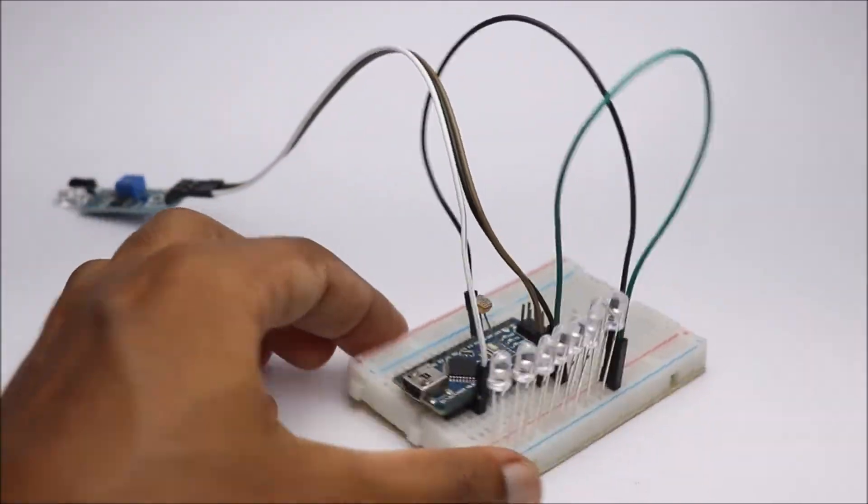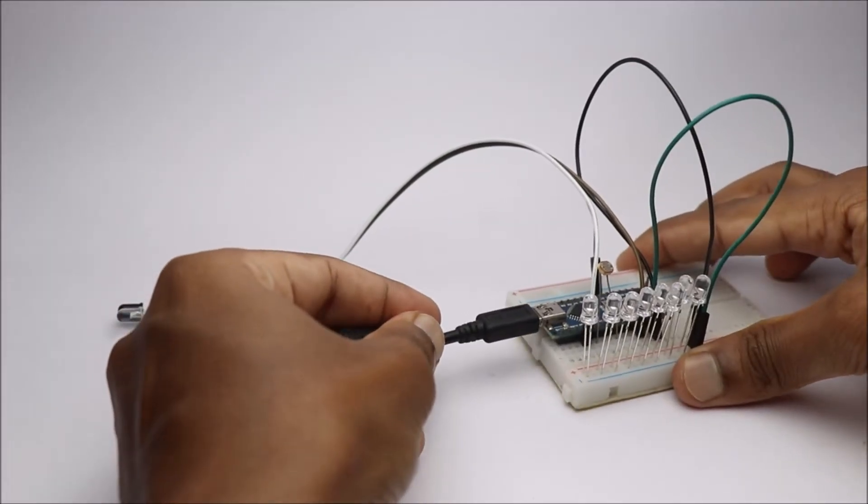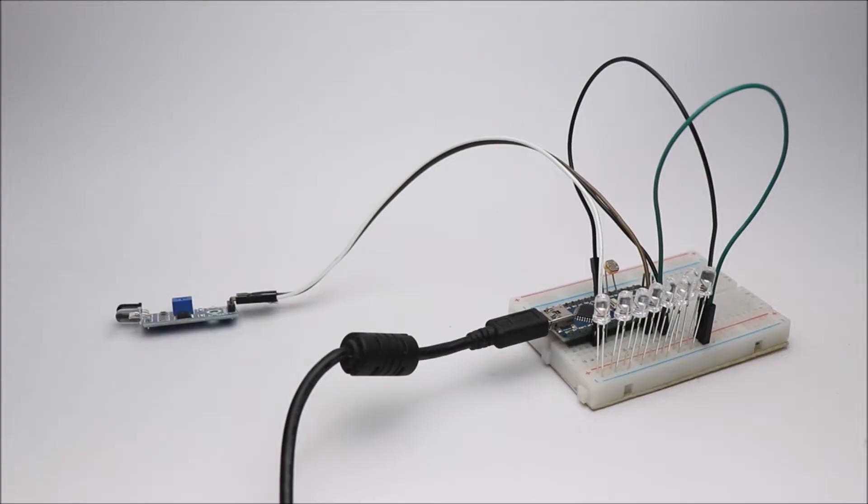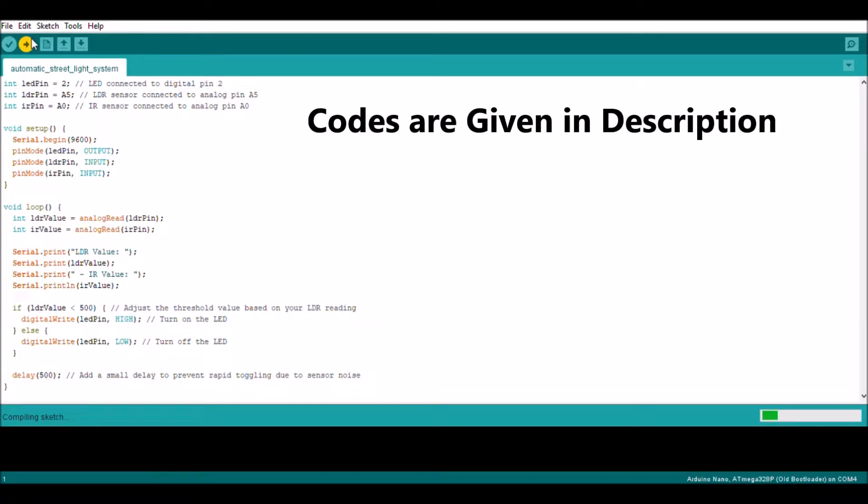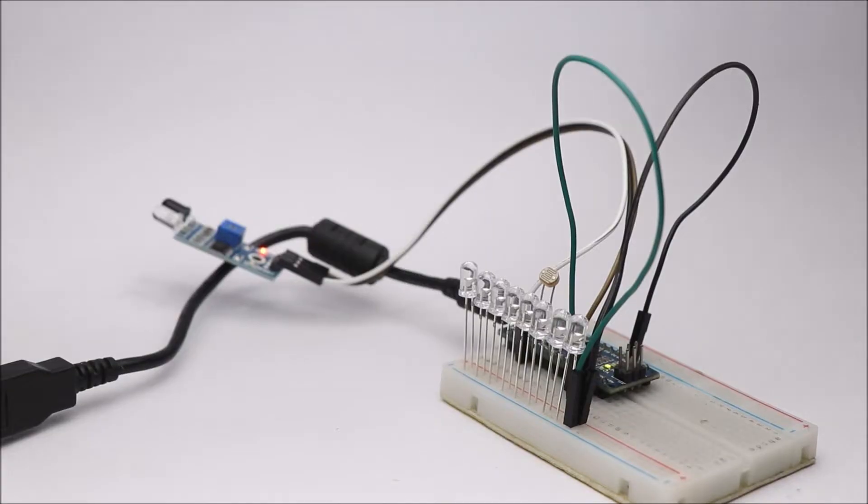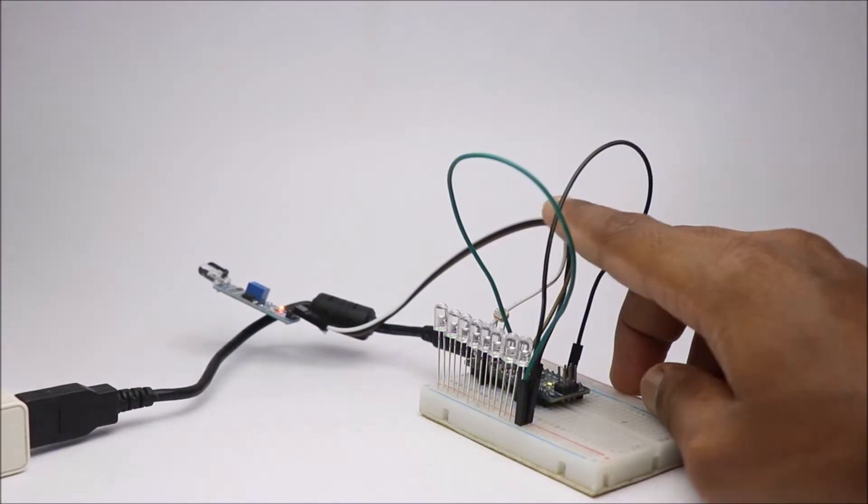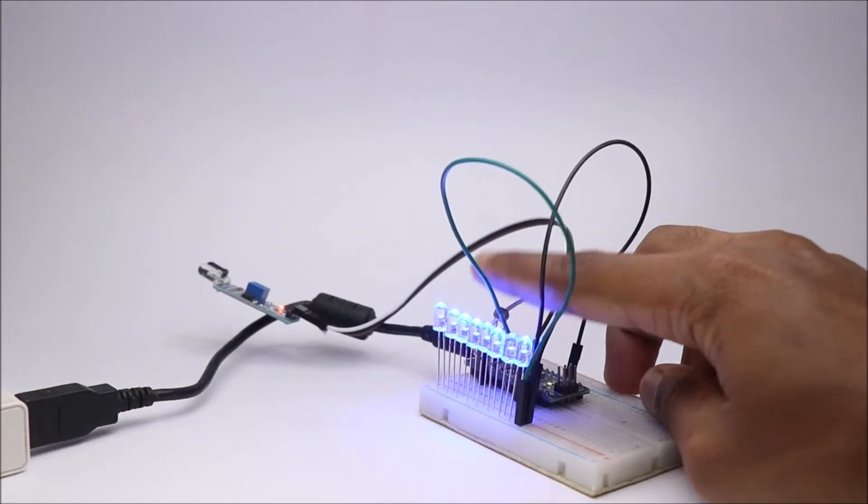After the circuit is complete you can upload the code. I have given codes in the description box below. When an obstacle is detected LED should glow. Also when LDR senses dark, the LED should glow.